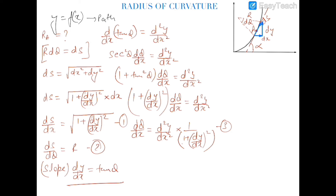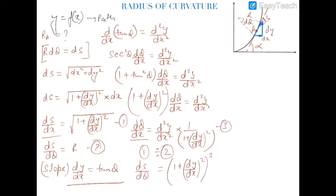Now to find ds/dθ, which equals the radius r, I divide equation one by equation three. This gives ds/dθ = (ds/dx) / (dθ/dx). Working this out, ds/dθ equals (1 + (dy/dx)²)^(3/2) multiplied by 1/(d²y/dx²).